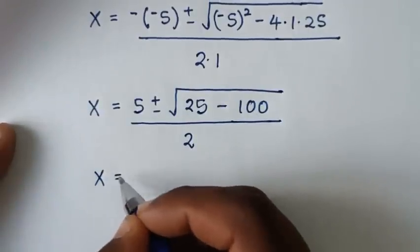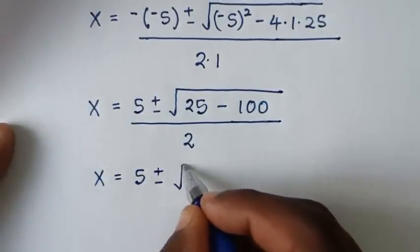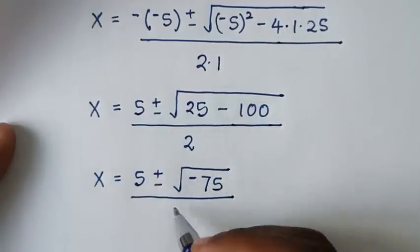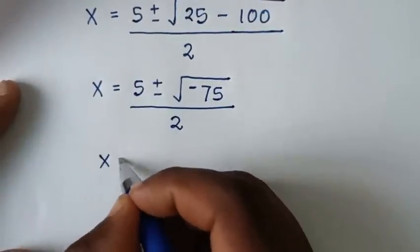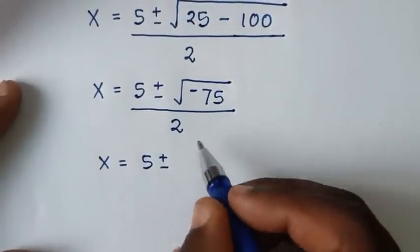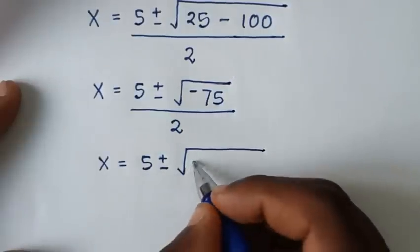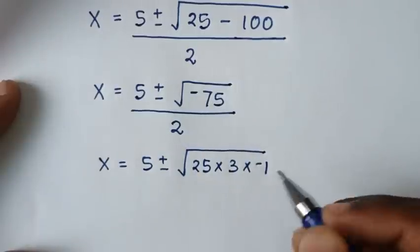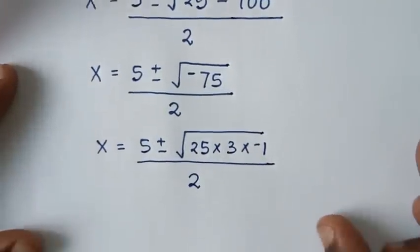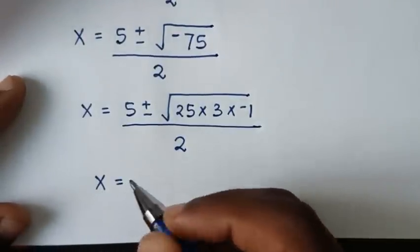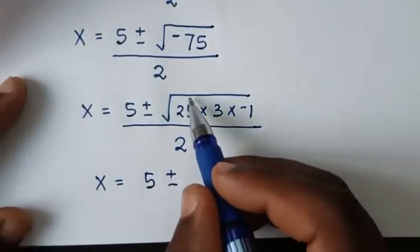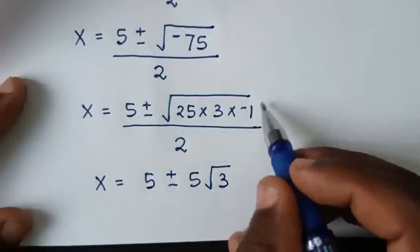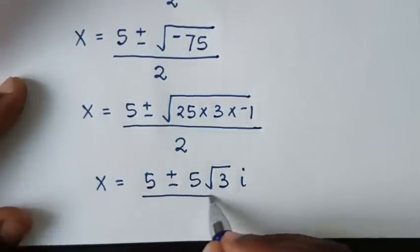So x is equal to 5 plus or minus square root of 25 minus 100, which is minus 75, over 2. Then square root of negative 75 is the same as square root of 25 times 3 times negative 1, and multiplying by negative 1 gives the imaginary unit i. So it becomes 5 plus or minus 5 times square root of 3 times i, over 2.